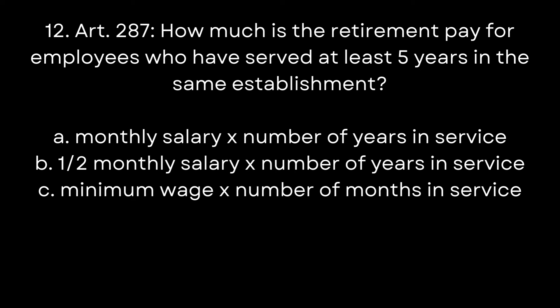Question 12. Article 287. How much is the retirement pay for employees who have served at least 5 years in the same establishment? A. Monthly salary times the number of years in service. B. 1.5 monthly salary multiplied by the number of years in service. C. Minimum wage multiplied by number of months in service. The answer is B. 1.5 monthly salary multiplied by the number of years in service.